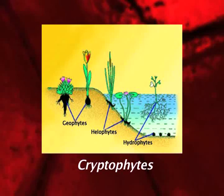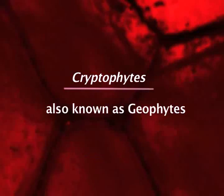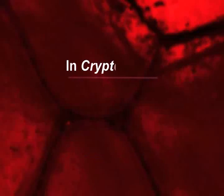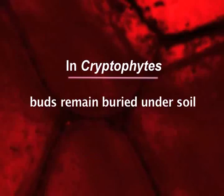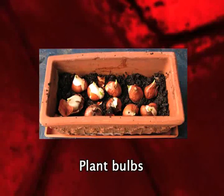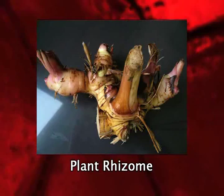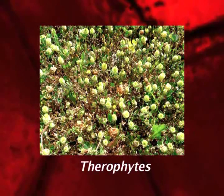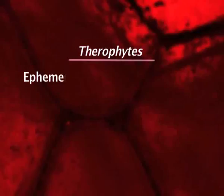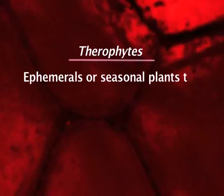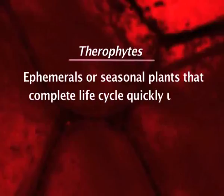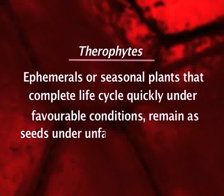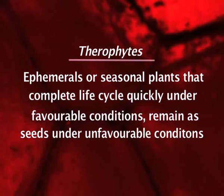Cryptophytes are also known as geophytes. In these plants, the buds remain buried under soil, such as in bulbs and rhizomes. Such plants are mostly found in the arid regions of the world. Therophytes are the ephemerals or seasonal plants that complete their life cycle quickly under favorable conditions, and during the rest of the unfavorable conditions remain in the form of seeds.